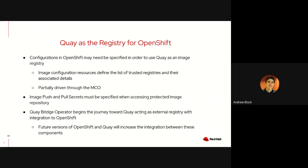To use Quay as a registry for OpenShift, you need to change configurations around the image custom resources found in any OpenShift environment — listing trusted registries and optionally configuring Quay as insecure. This configuration is driven by the machine config operator, which configures the underlying CRI-O metadata within each individual node. Image pull and push secrets must be configured for any protected image registries, and the Quay Bridge operator provides the first step toward tighter OpenShift registry integration within Quay.